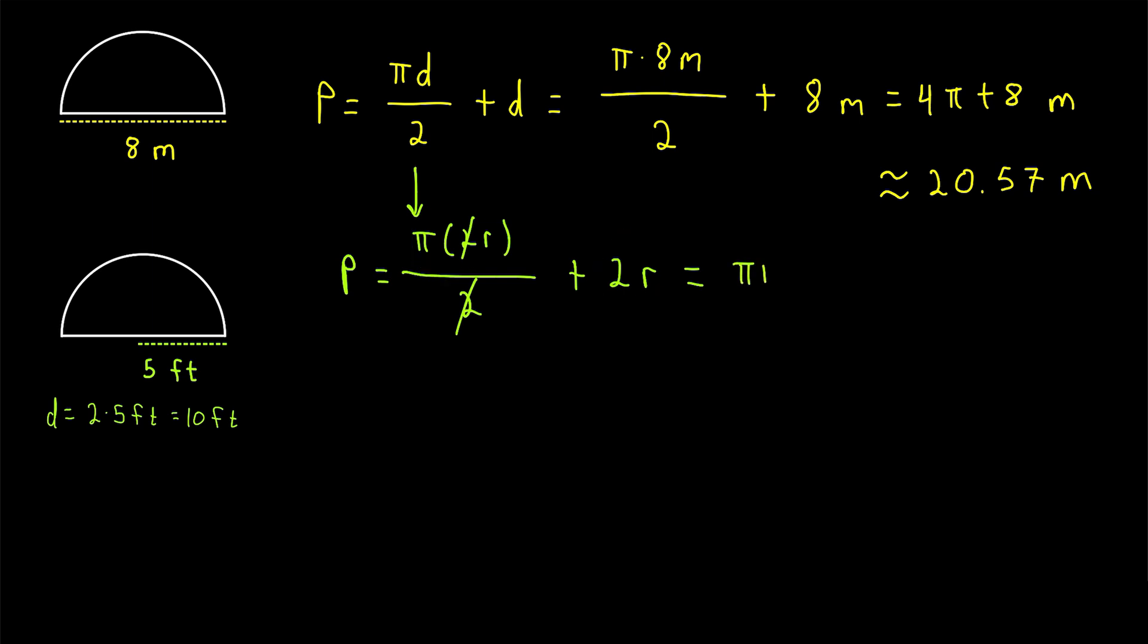So that's pi r plus 2r. And then if you wanted to factor out an r from both of these terms, we'd have the perimeter of our semicircle in terms of the radius is r times (2 plus pi). That's kind of neat looking. But again, that was completely unnecessary to do. We could have just used this formula with our calculated diameter.